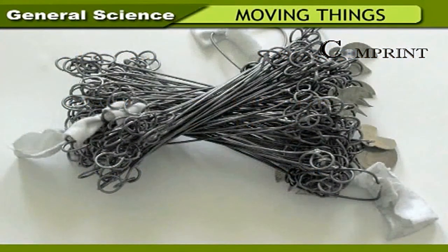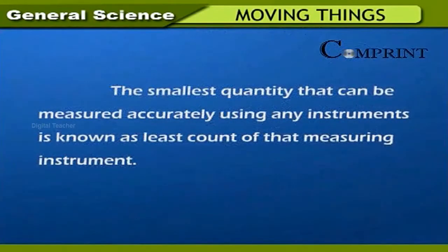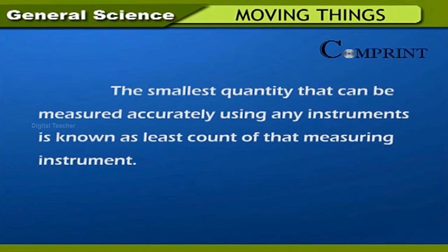Instruments like scale, tape, and survey chains are used to measure distances and the length of objects and lands. The smallest quantity that can be measured accurately using any instrument is known as the least count of that measuring instrument.